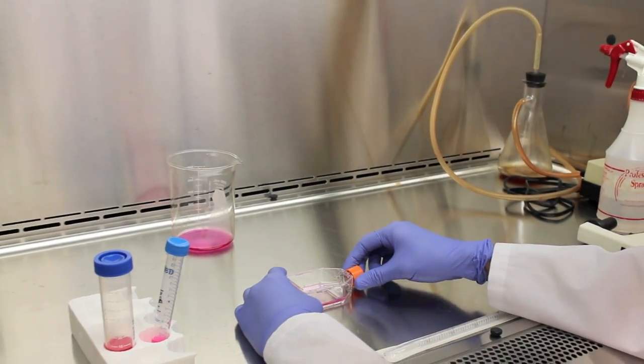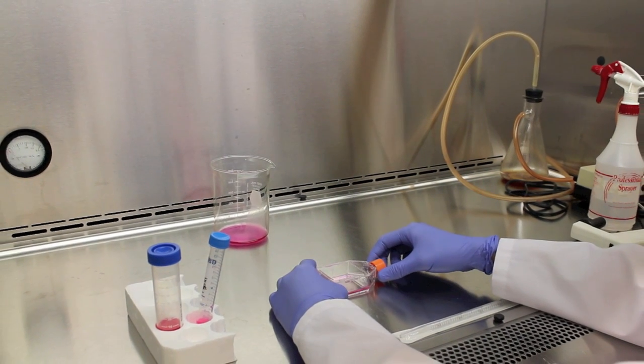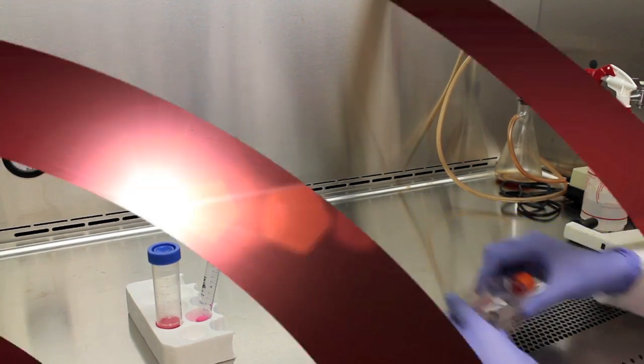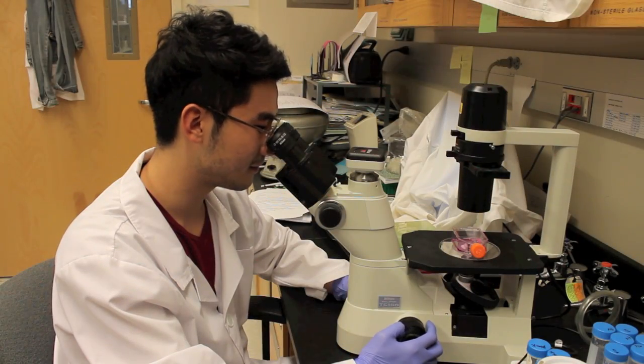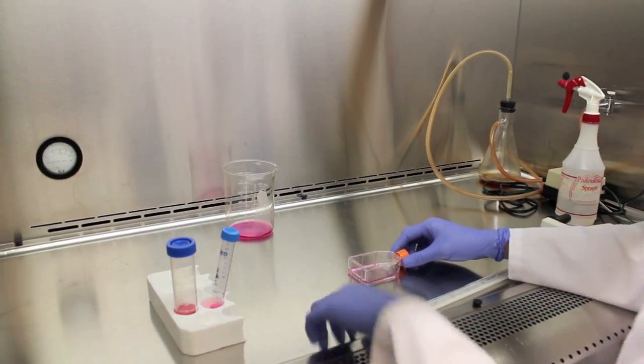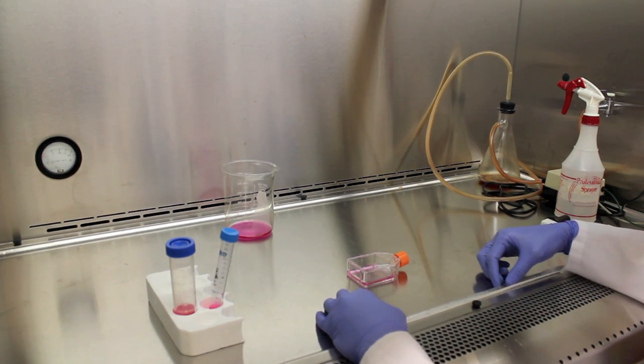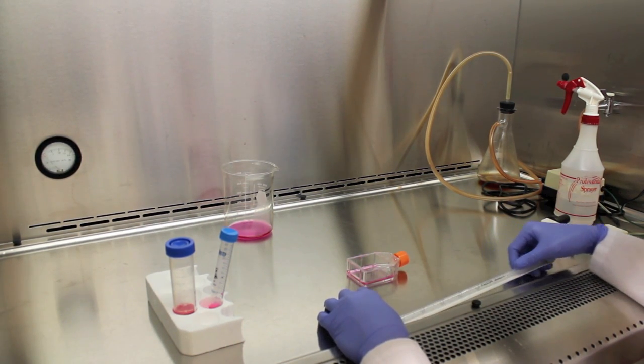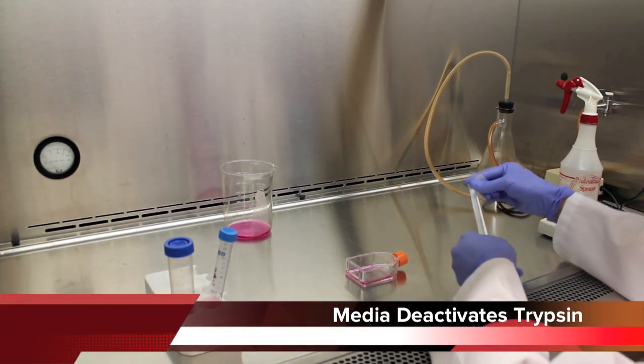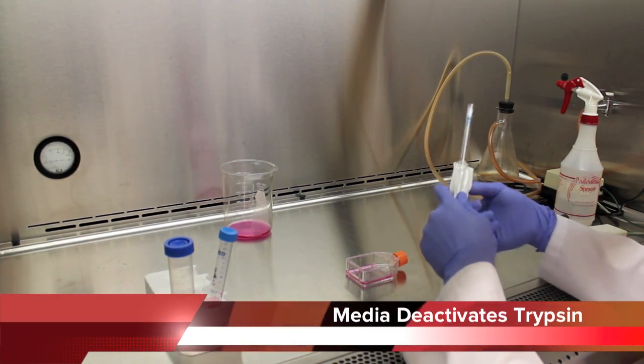Trypsin makes the cells detach. And using the microscope, make sure all cells detach. Now, add 3.5 ml of the new media, that media deactivates the trypsin.